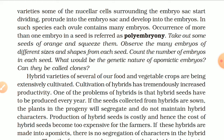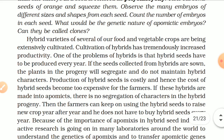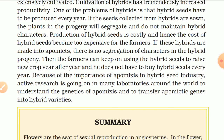Apomictic embryos are genetically identical to the parent and can be called clones. Hybrid varieties of several food and vegetable crops are being extensively cultivated, tremendously increasing productivity. However, one problem with hybrids is that hybrid seeds have to be produced every year — if seeds collected from hybrids are sown, the plants in the progeny will segregate and not maintain hybrid characters. Production of hybrid seeds is costly. If these hybrids are made apomictic, there is no segregation of characters in the hybrid progeny, and the farmer can keep using the hybrid seeds to raise new crops year after year without buying seeds every year. Because of the importance of apomixis in the hybrid seed industry, active research is ongoing in many laboratories worldwide to understand the genetics of apomixis and to transfer apomictic genes into hybrid varieties.